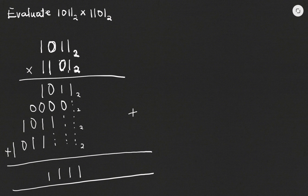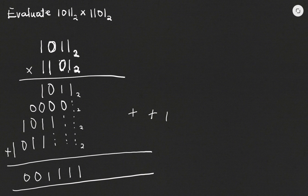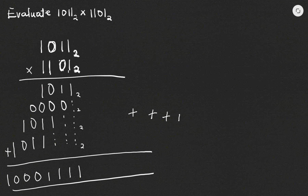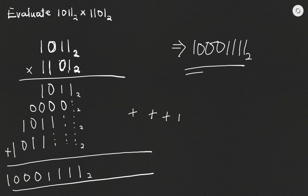1 plus 0 is 1, plus the carried 1 is 2. 2 into 2 goes once, remainder 0 — write 0, carry 1. Then this 1 plus the carried 1 is 2; 2 into 2 goes once, remainder 0 — write 0, carry 1. We bring that remaining 1 to the front. So my answer is 10001111 base 2.